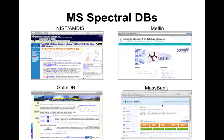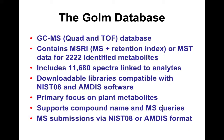There are mass spectral databases — we've mentioned NIST, METLIN, GOLM, and MassBank. The GOLM database is one of the oldest publicly accessible databases for metabolomics, around since the late 1990s and written about in 2003 or 2004. It's a GCMS database with more than 2,000 compounds in its archives and about 11,000 spectra linked to those compounds. It's compatible with NIST and AMDIS. There is a focus on plant metabolites, but it's continuing to expand. You can both analyze and submit data to it. This is maintained by the Max Planck Institute.